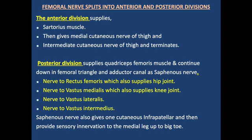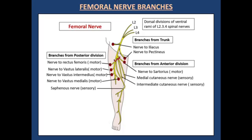The posterior division also gives the nerve to adductor femoris, which supplies the hip joint; the nerve to vastus medialis, which also supplies the knee joint and needs to be blocked in the adductor canal block; nerve to vastus lateralis; and nerve to vastus intermedius — all four bellies of the quadriceps femoris are supplied by the posterior branch. It also gives one cutaneous branch, the infrapatellar cutaneous branch, which supplies the medial side of the leg up to the big toe. The femoral nerve is formed from L2, L3, L4, with two muscular branches from the trunk before passing the inguinal ligament: nerve to iliacus and nerve to pectineus.